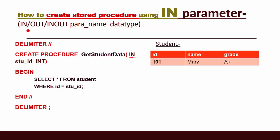Here is the syntax for listing parameters. First, we tell the mode — whether it is IN, OUT, or INOUT. Second, we give the parameter name. Then the data type. So for this IN parameter, the mode is IN, the name is 'stu_id' (which is the student id), and the data type is INT (integer).